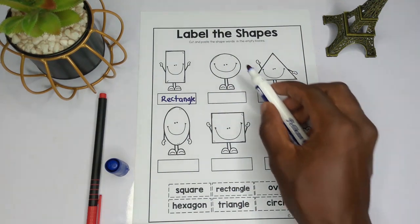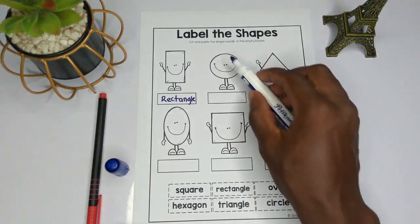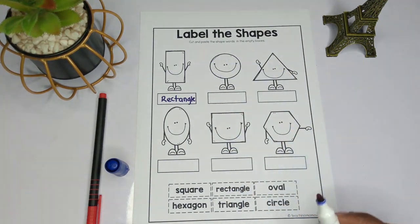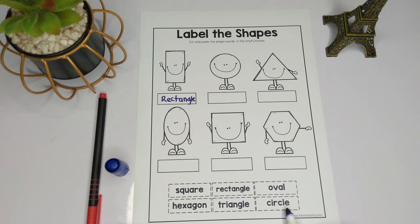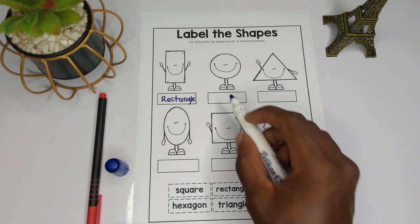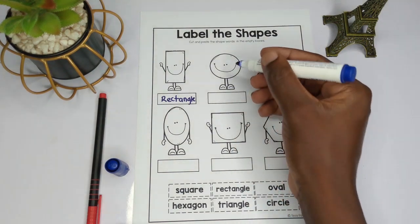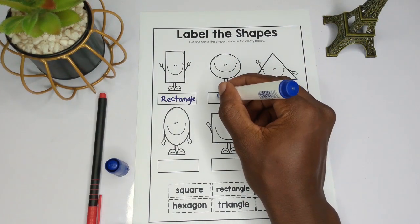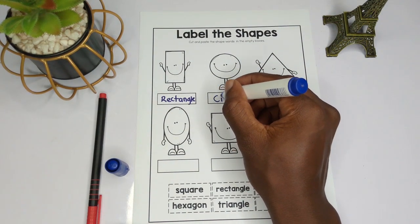Now let's look at the second one. We have a circular shape over here. This shape is what we call a circle — c-i-r-c-l-e. So the name of this shape is circle.